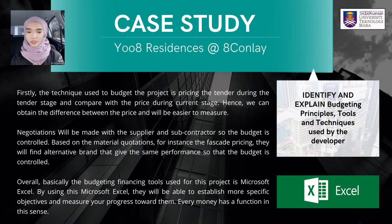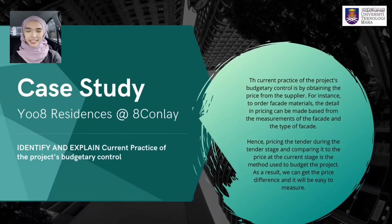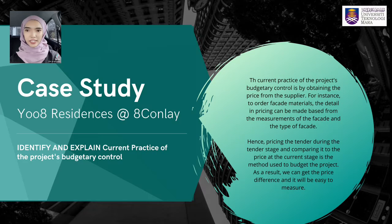Negotiation will be made with suppliers and subcontractors to control the budget. For example, for facade pricing, they try to find alternative brands that give the same performance so that the budget is controlled. The budgeting and financing tool used is Microsoft Excel, which is more specifically used to measure the progress of the Adconley project and for claims. Several problems have had effects on the financial budgeting.